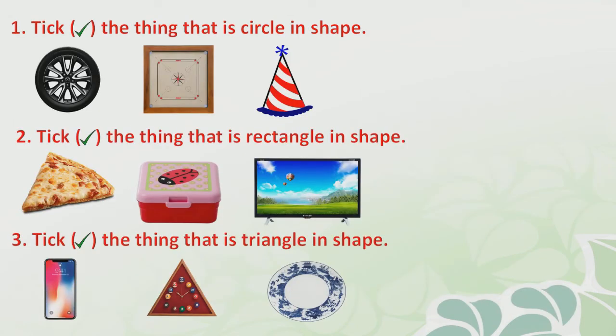Till now we have learned different basic shapes and we have also learned how to draw them. Now we are going to solve few questions related to shapes. First one: pick the thing that is circle in shape. Here are a few images — wheel, carom board, and clown cap. You have to find out which thing is similar to circle shape. Wheel is similar to circle, so let's tick it.